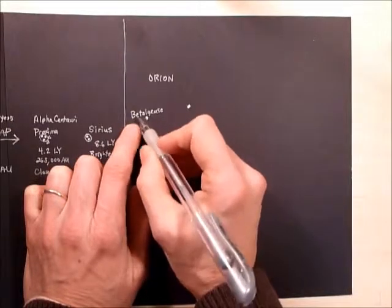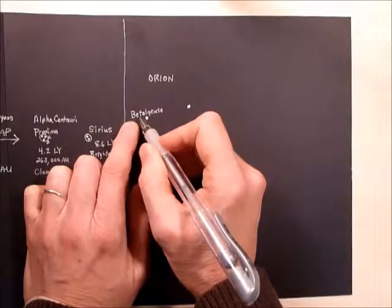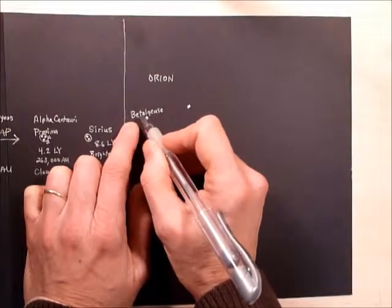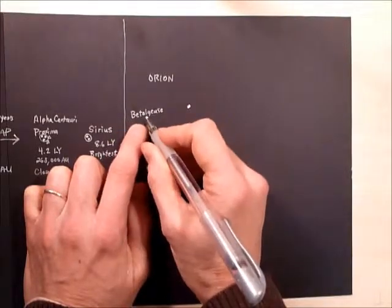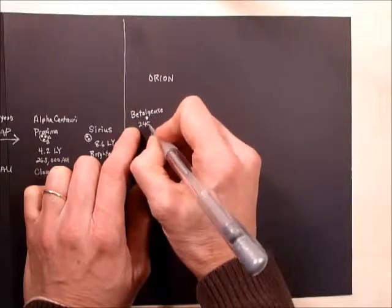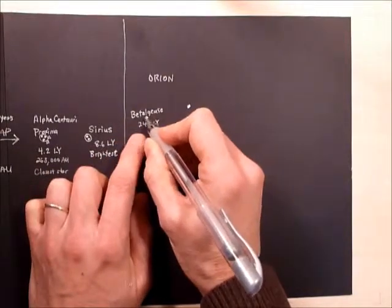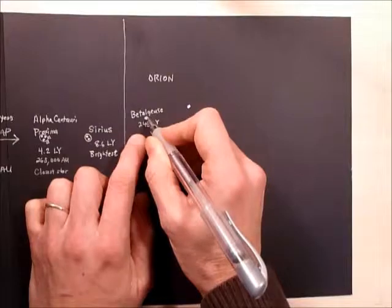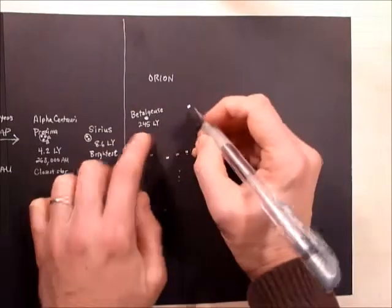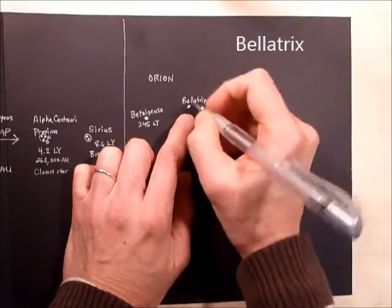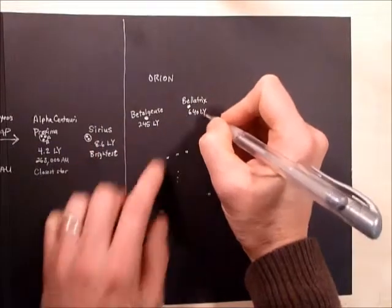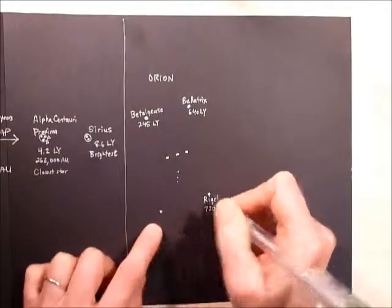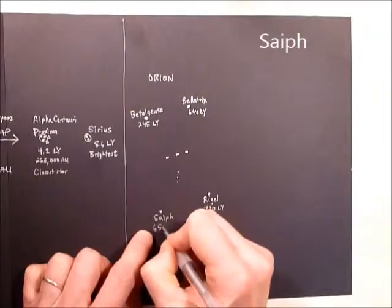So Betelgeuse. It's about 245 light years away. And it's so large. It's five astronomical units in diameter. So the actual size of Betelgeuse is about the distance between the Earth and Jupiter. That's how large it is. This one has a neat name. This one's called Bellatrix. And it's about 640 light years away. This one down here is called Rigel. And it's about 720 light years away. And this one here is called Saiph. It's an Arabic word, I think. And that's 650 light years about.